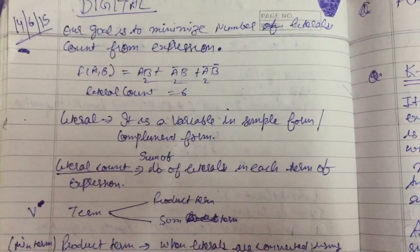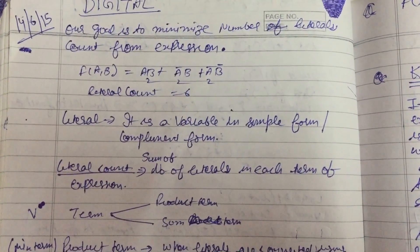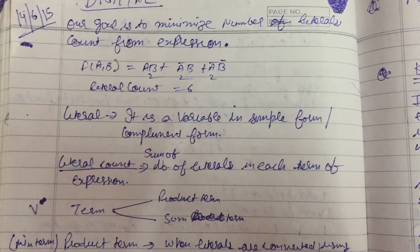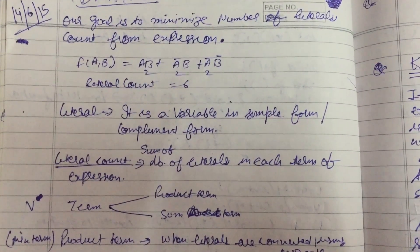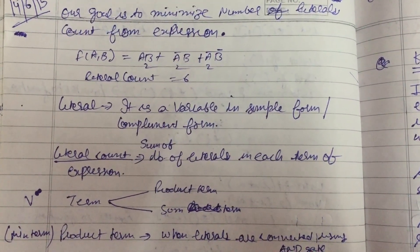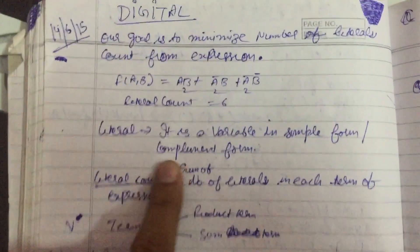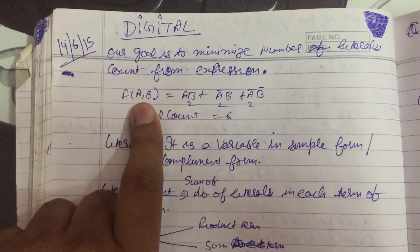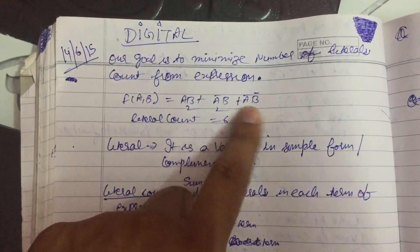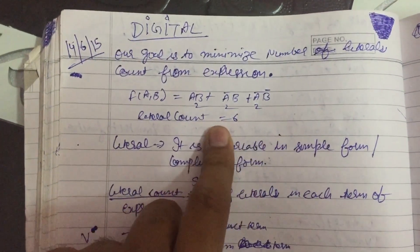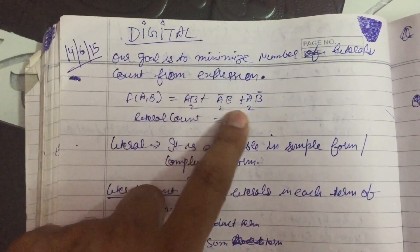Now what is literal? It is a variable in simple form or complement form. What is the literal count? Sum of number of literals in each term of expression. Suppose here is an example: function AB plus A complement B, plus A complement B complement. The total literal count is 6: 1, 2, 3, 4, 5, 6.